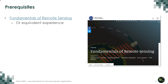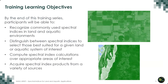Since this is an introductory training, we only have one prerequisite, which includes our Fundamentals of Remote Sensing, which you can view here, or having equivalent experience. We hope you can achieve these learning objectives through the course of our three-part series: recognizing commonly used spectral indices in land and aquatic environments, distinguishing between spectral indices to select the best suited for a given landscape, computing spectral index calculations over appropriate areas of interest, and acquiring spectral index products from a variety of sources.